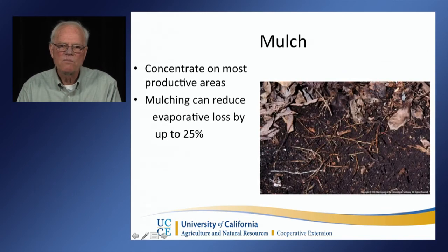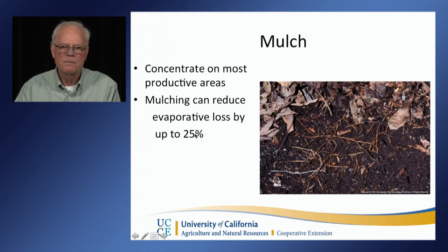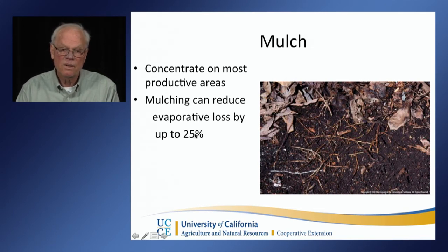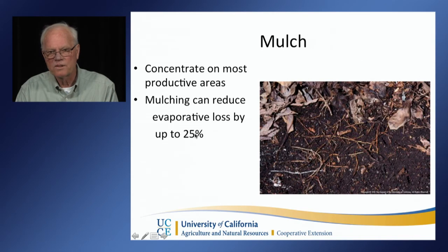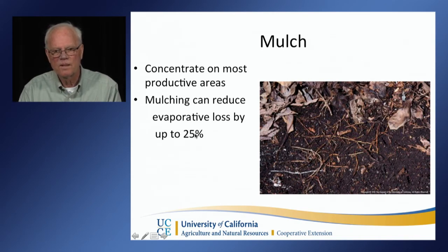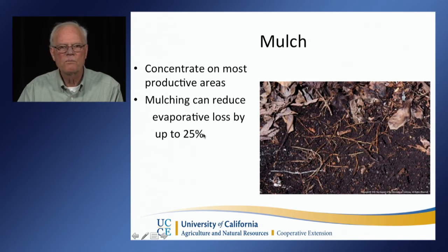Mulching can reduce evaporative loss from the soil surface by about 25%. This is an expensive process — the mulch itself is often relatively inexpensive or free, but there's a lot of labor associated with spreading it, so you want to put it on the most productive areas to gain some evaporative loss reduction.